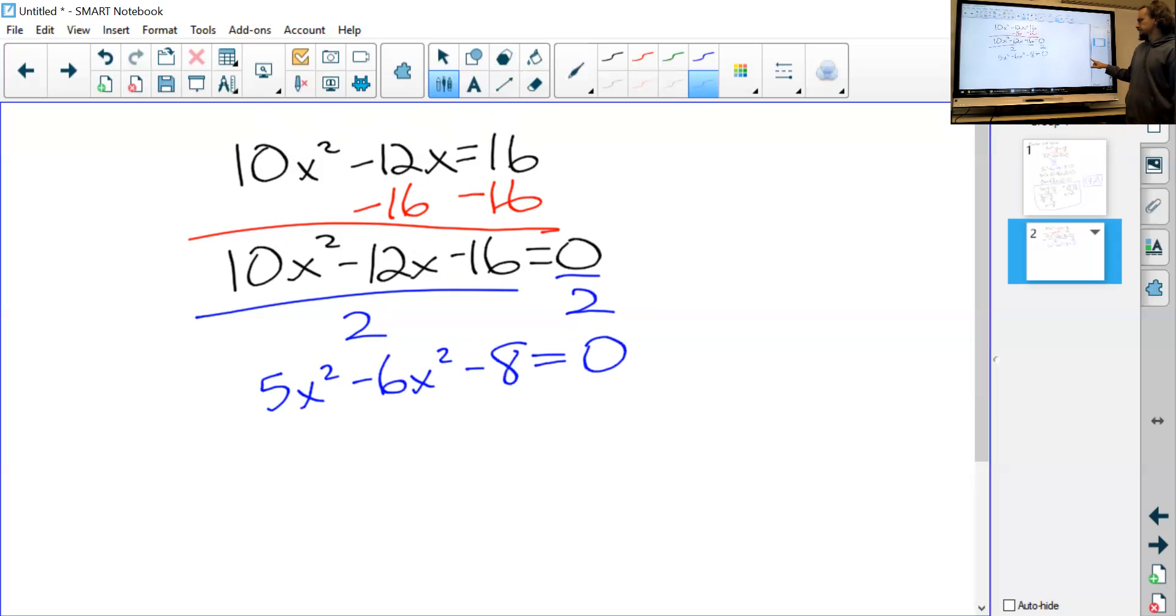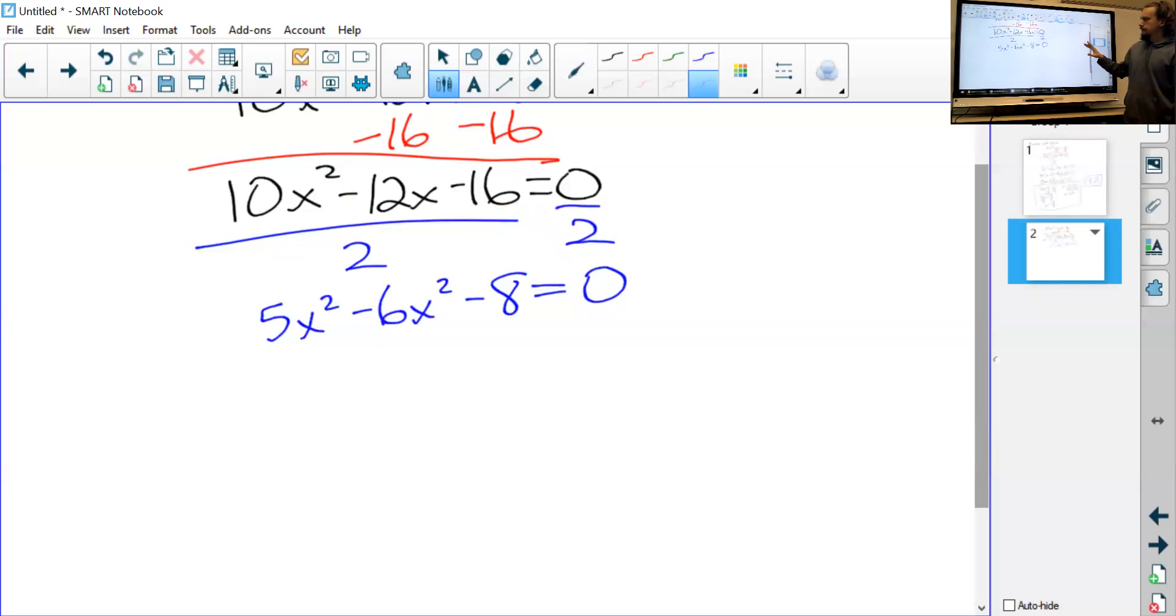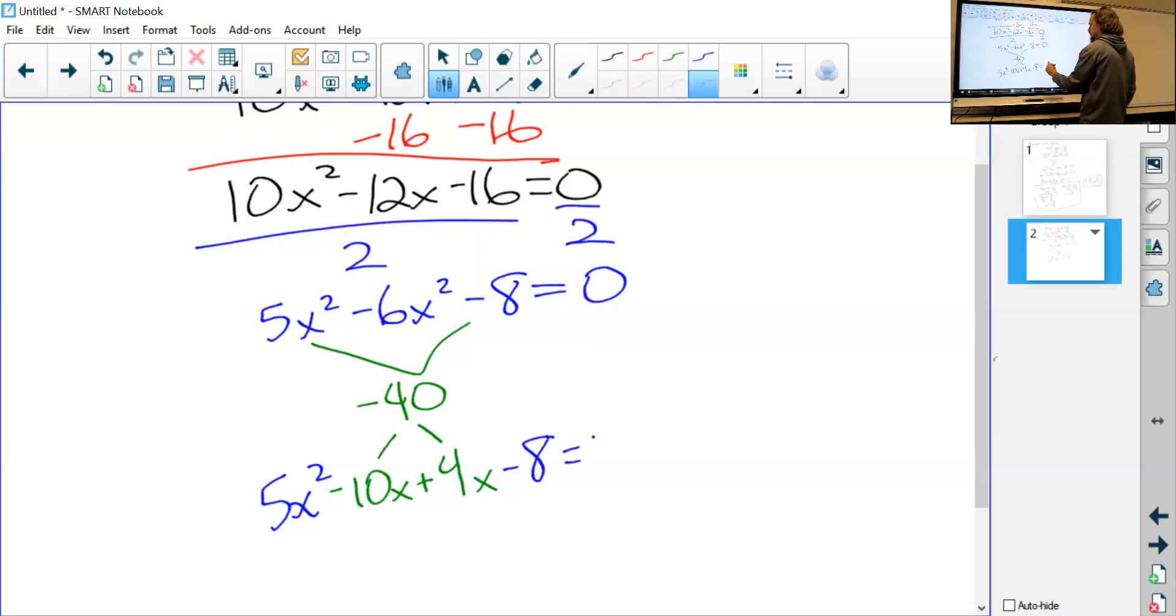From here, now we factor it out. We look for factors multiplying together to get -40, then we look for two factors that will give us -40 and add up to -6, which is -10 and positive 4. So that's -10x + 4x. Copy the rest down: 5x² - 8 still equals 0. Don't forget it.